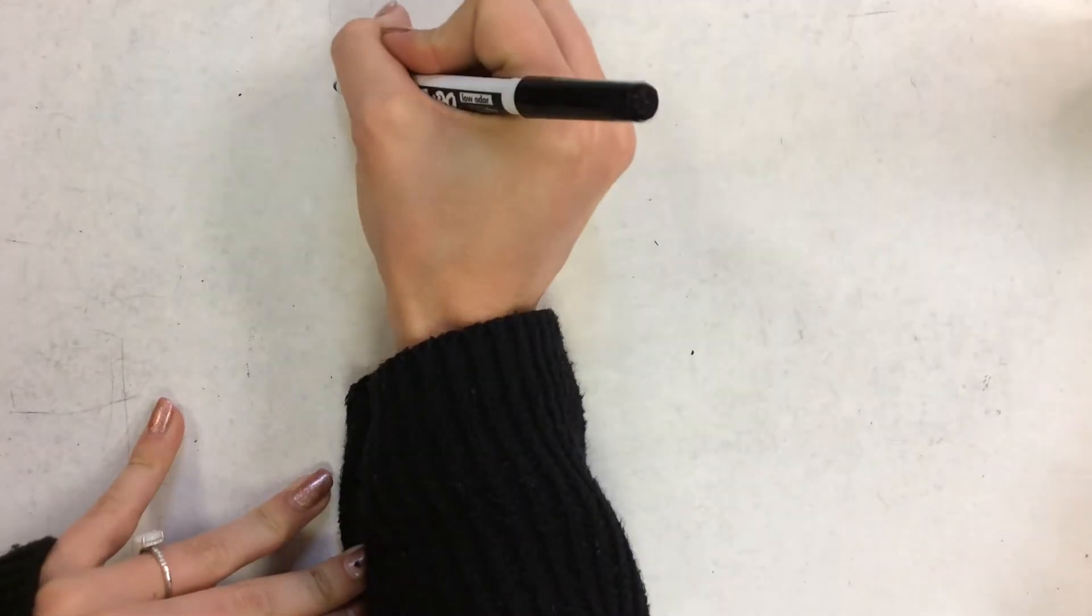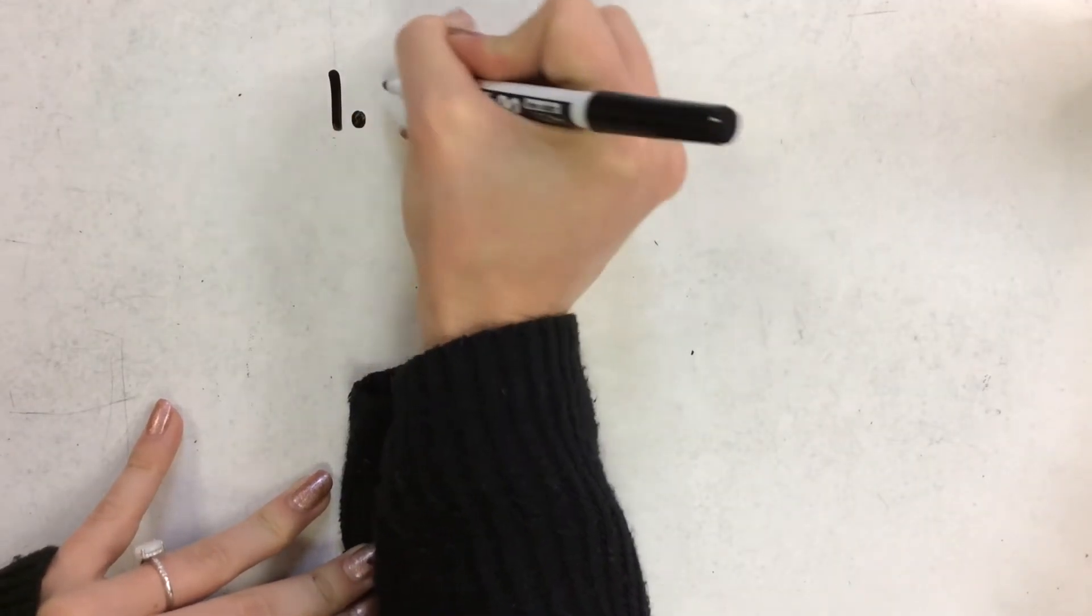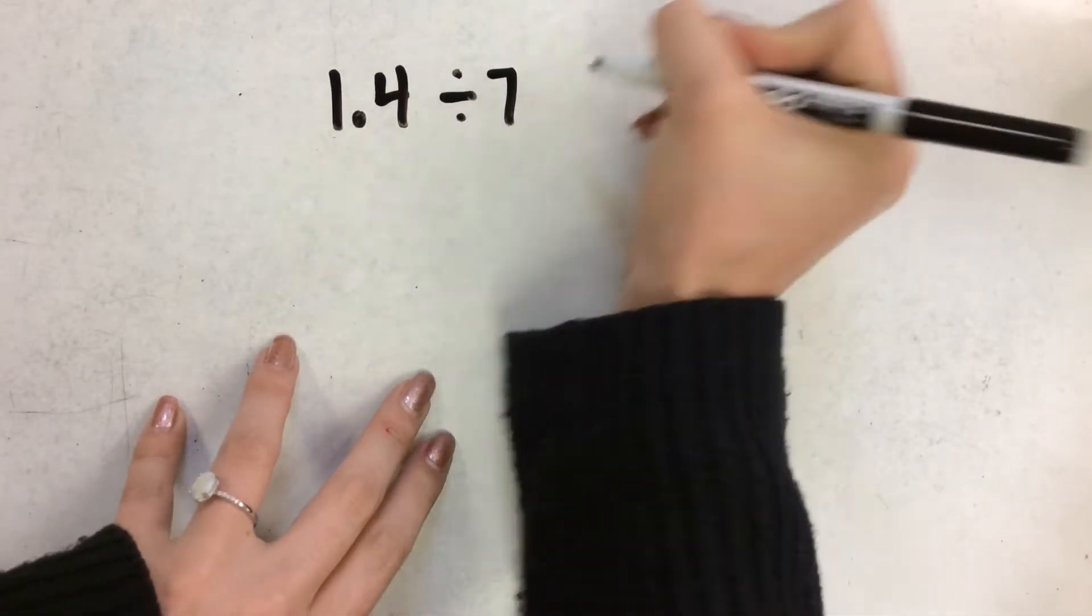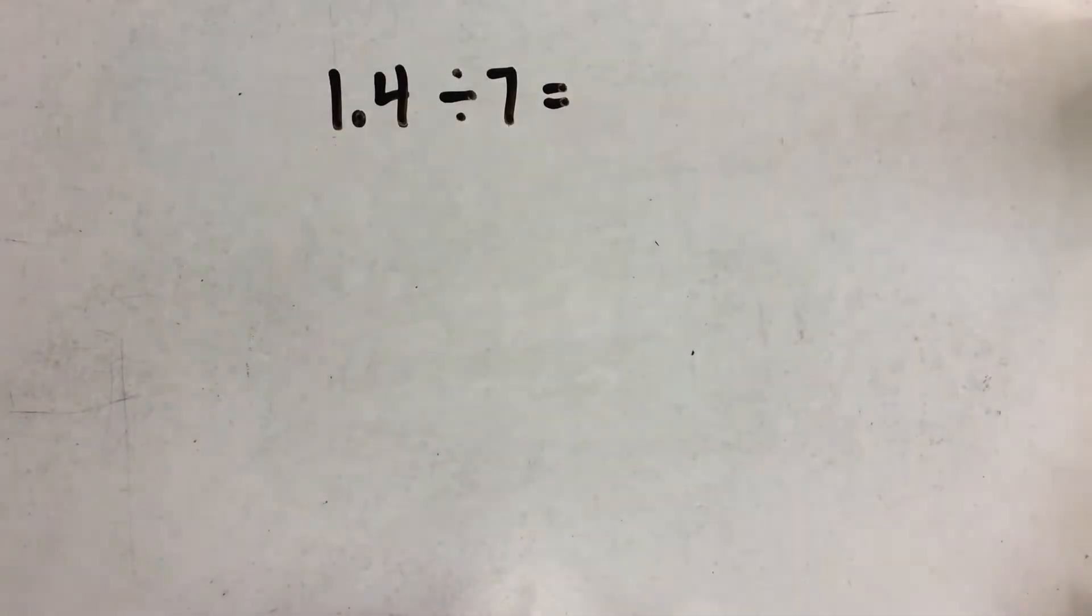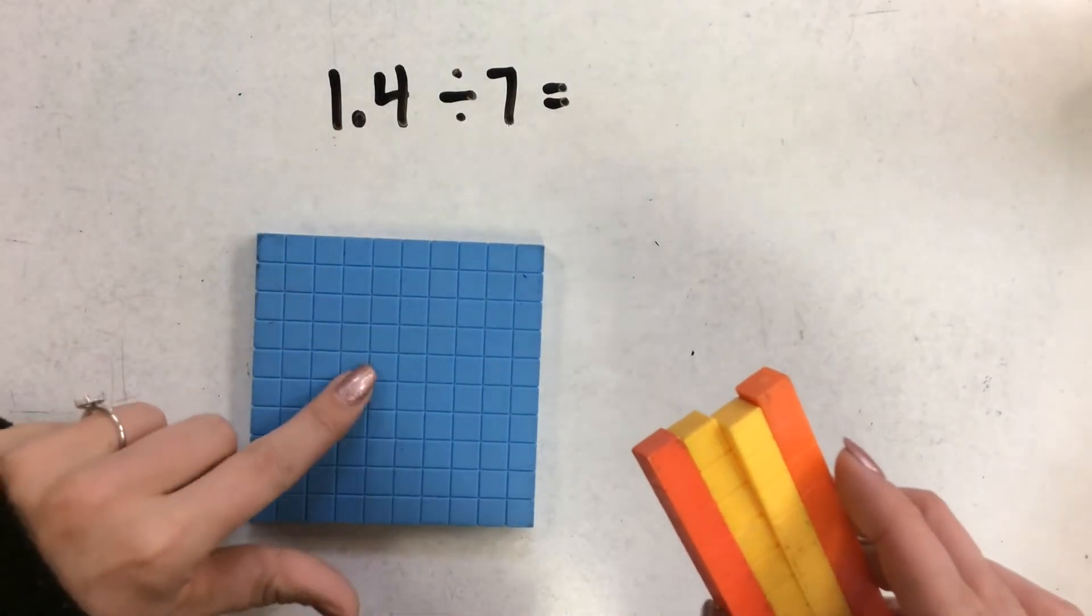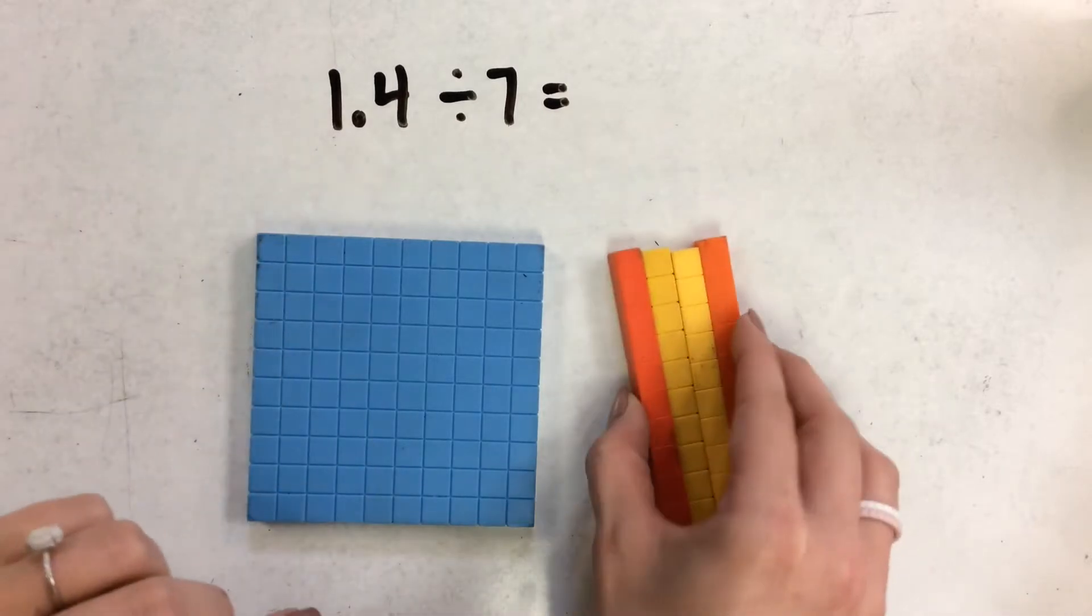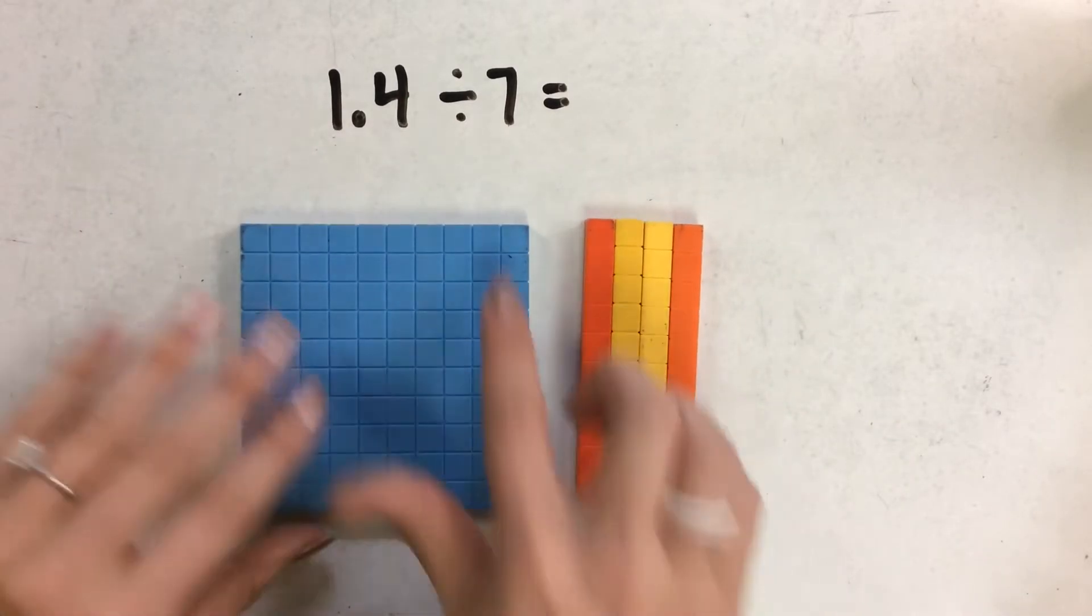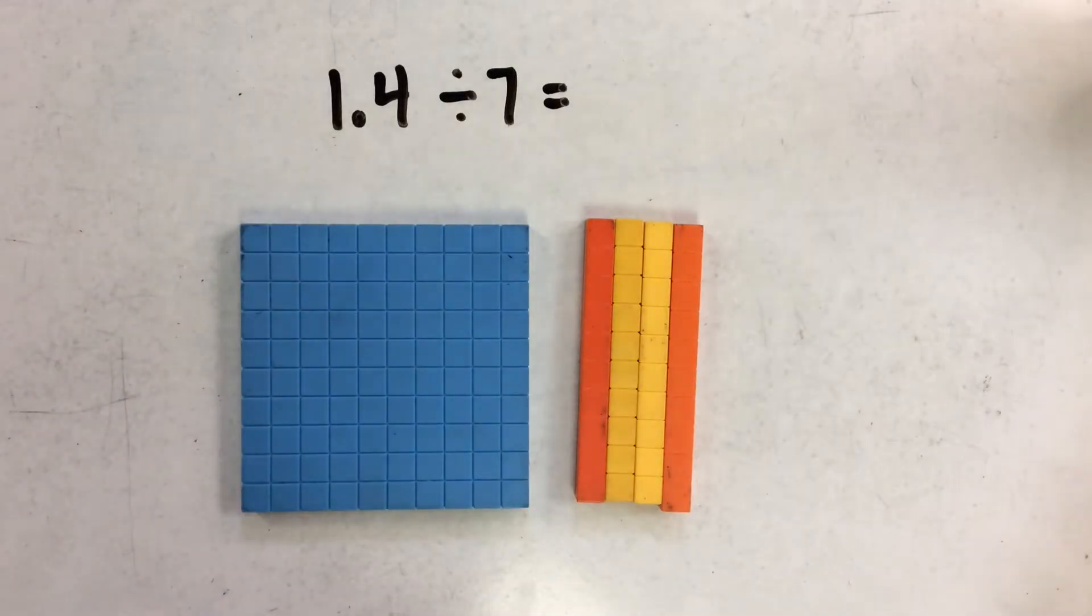So we're going to represent this problem: 1.4 divided by 7. And we're going to represent it using base 10 blocks. So here I have my 1 whole and my 4 tenths.